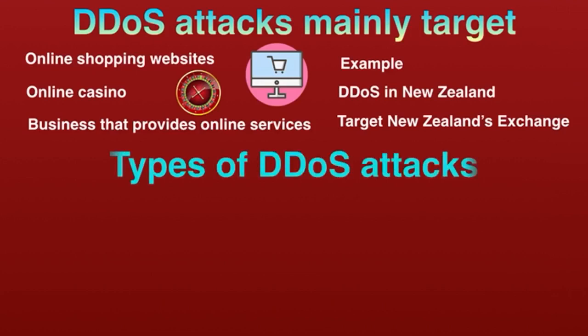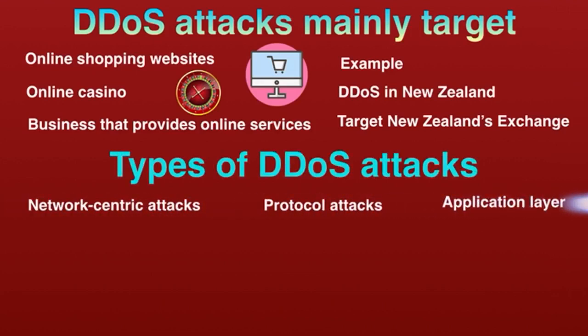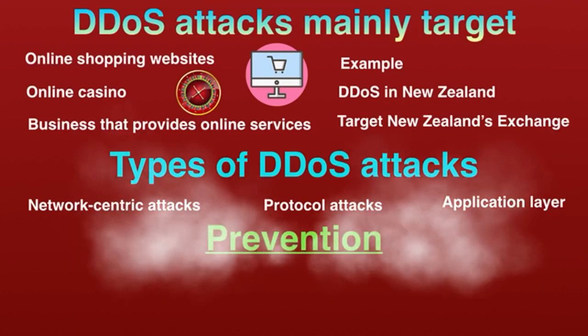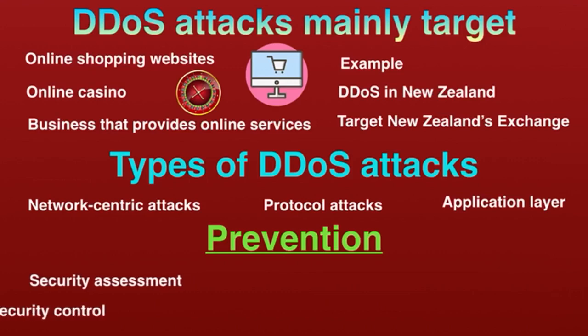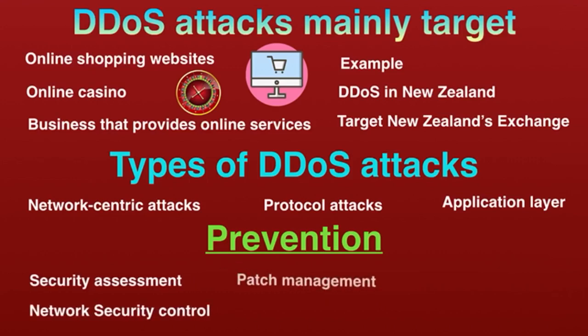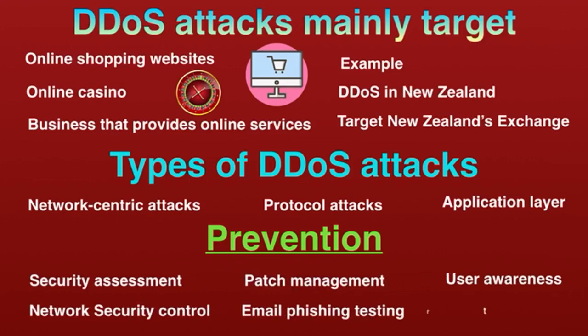DDoS attacks have mainly three types: network-centric attacks, protocol attacks, and application layer attacks. To prevent such attacks, ongoing security assessment, network security controls, patch management, email phishing testing, user awareness, and proactive network monitoring and alerting can all help to minimize DDoS attacks.